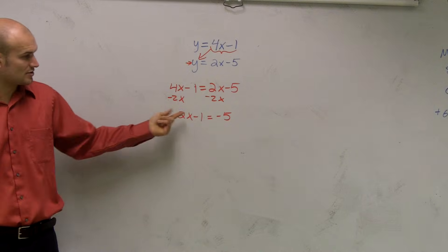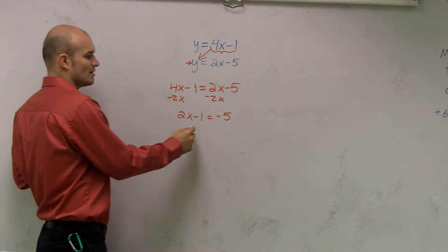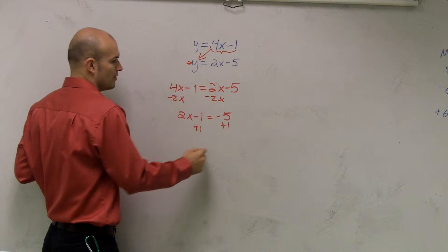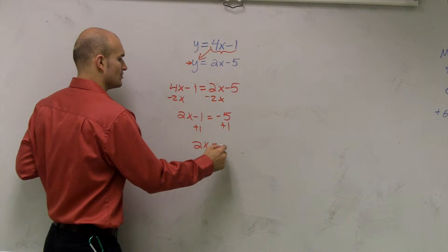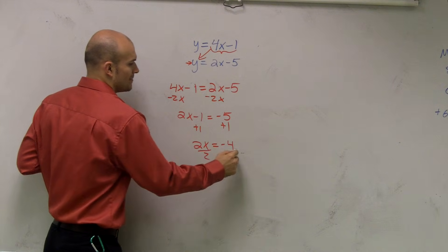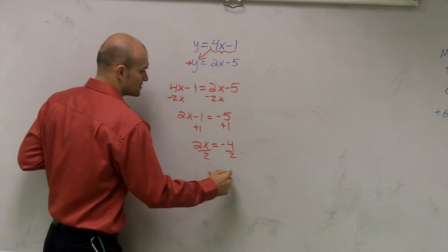Now I need to isolate my variable. So I undo everything that's happening to my variable. So I'll add my 1. I get 2x equals negative 4. Divide by 2. x equals negative 2.